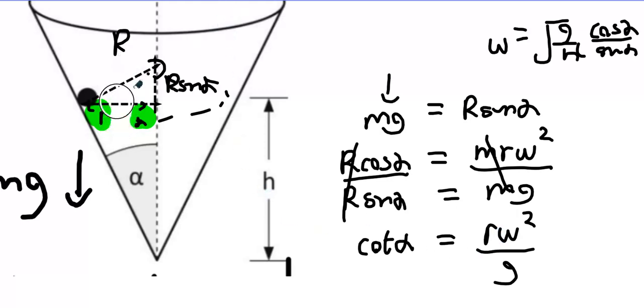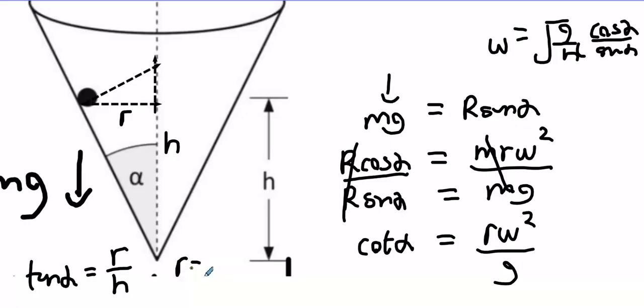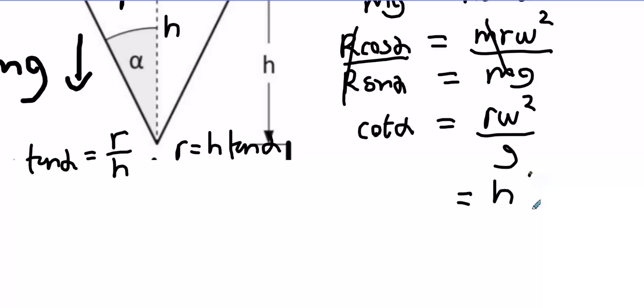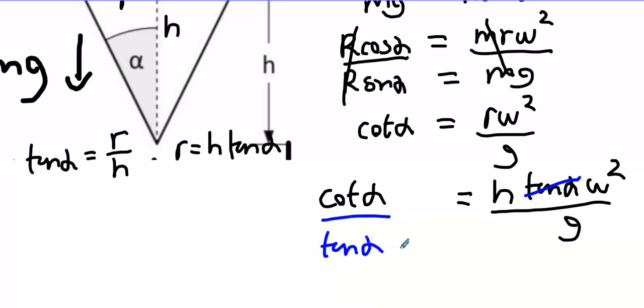Here's what I'm thinking. Would everybody agree this is small r? Would everybody agree this is small h? Would everybody agree that tan alpha is r over h. R therefore is h tan alpha. So what can I replace R with then? H tan alpha. Omega squared over G. Cotan alpha. Now look what happens here. See this tan alpha? What happens when I bring it downwards? It goes down here, doesn't it? And what is 1 over tan alpha? It's another cotan alpha.